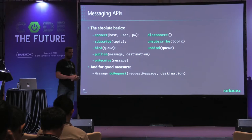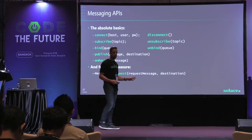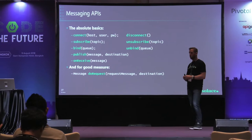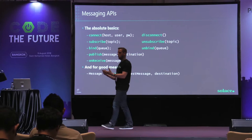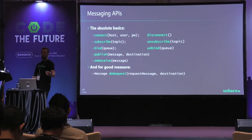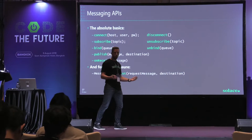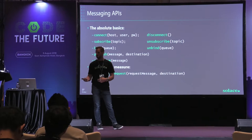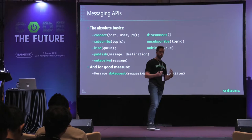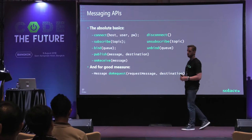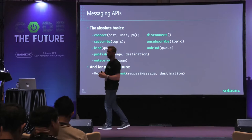A messaging API is pretty basic: you connect to a broker, subscribe to a topic — topics define what you're interested in, whether temperature sensors, stock prices, or whatever. You can unsubscribe, bind or unbind from queues. Some brokers can bind topics to queues in complicated wiring diagrams. You publish data onto the bus associated with a destination — topic or queue — and the event broker's job is to take that information and route it to where it needs to go.